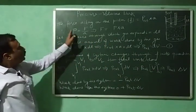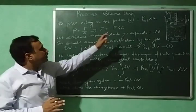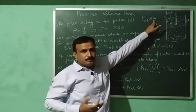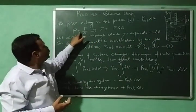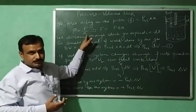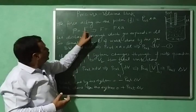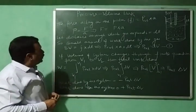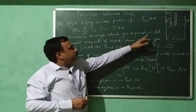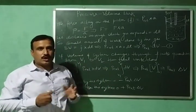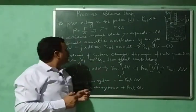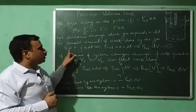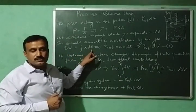The force acting on the piston is P external multiplied by A. This comes from the fact that pressure equals force per unit area, i.e., force divided by area — so force equals pressure into area. The distance through which the gas expands is dL centimeters. So now we have force and we have the distance. The small amount of work done by the gas will be equal to F into dL, that is force into displacement.